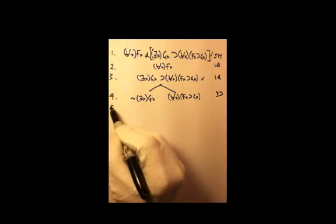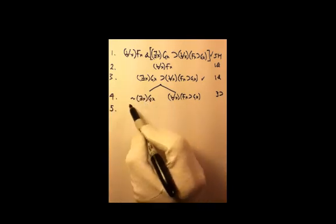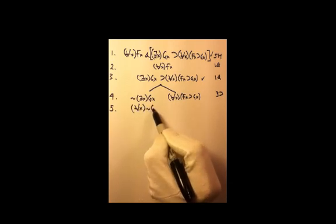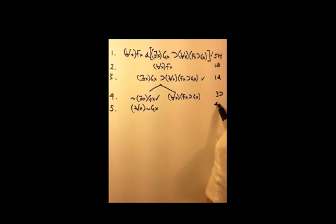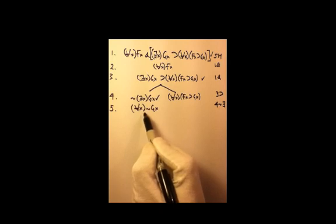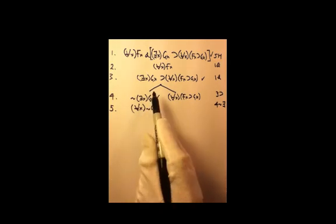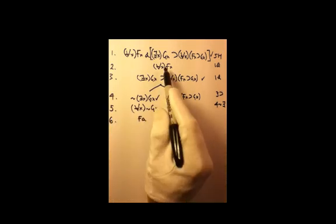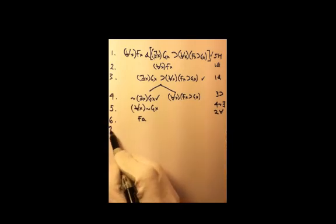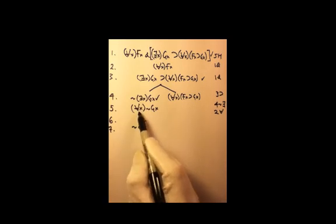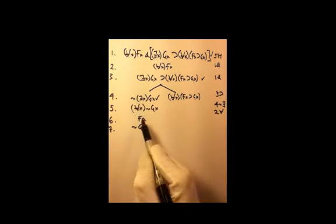On line 5, we're not quite done with this branch. We have to decompose that: 'for all x, it's not the case that g(x),' which comes from line 4 by negated existential decomposition. We're not free to say we have a completed open branch until we instantiate all the universal quantifiers. So we do f(a) from line 2 and not-g(a) — we can reuse 'a' since these are universally quantified sentences. That gives us a completed open branch.